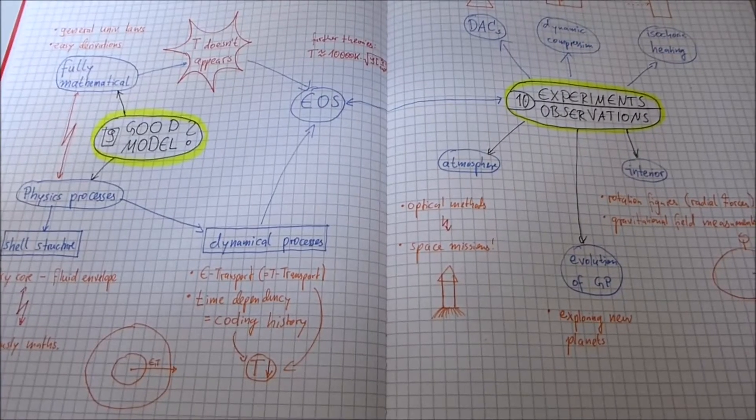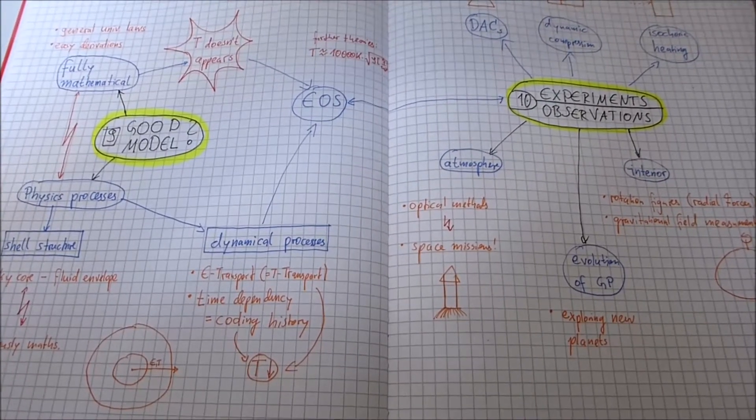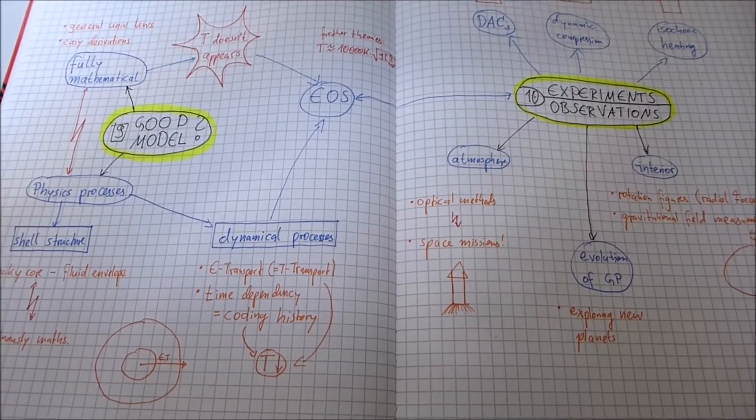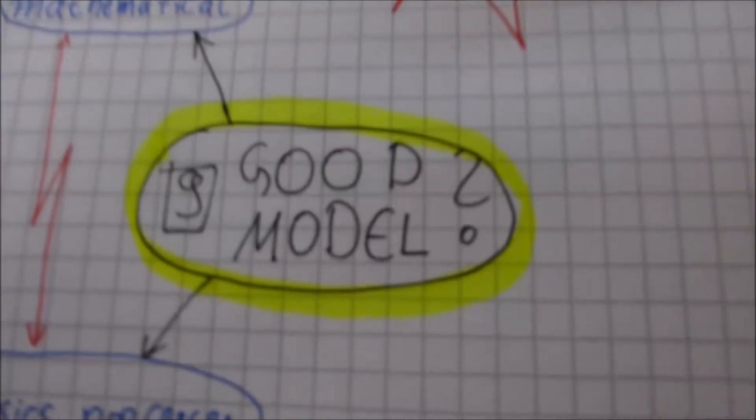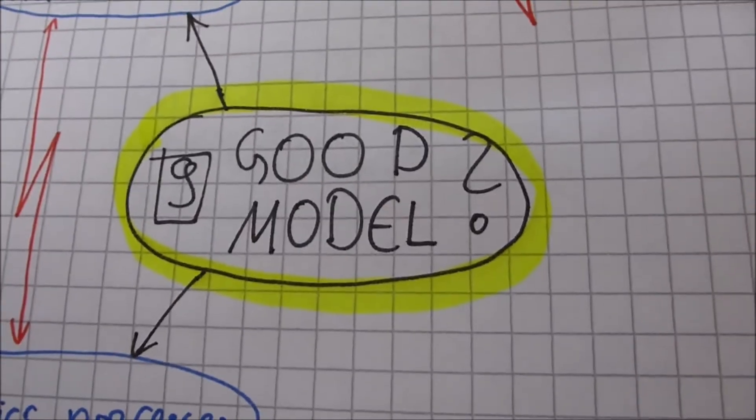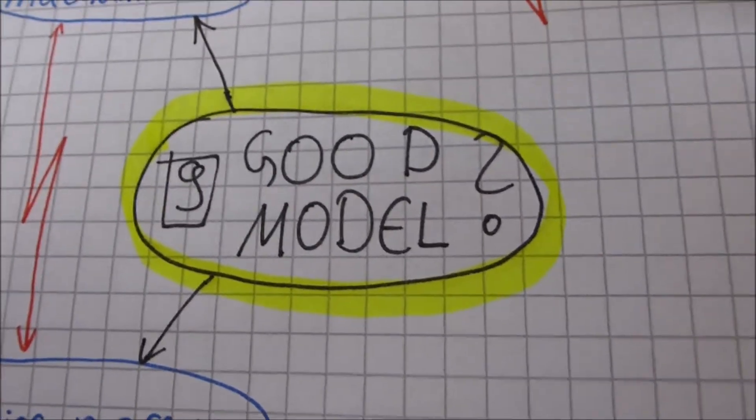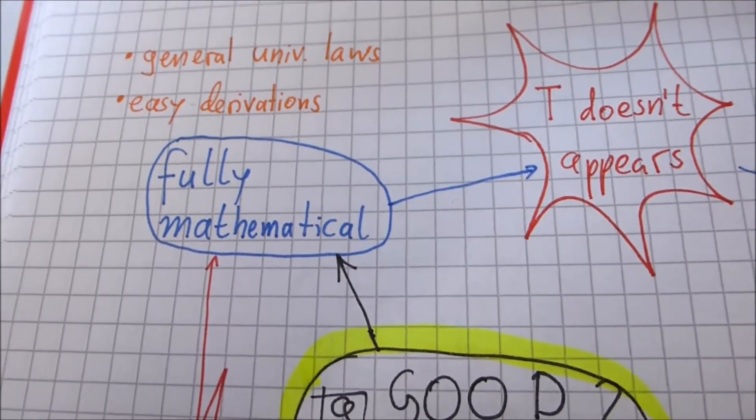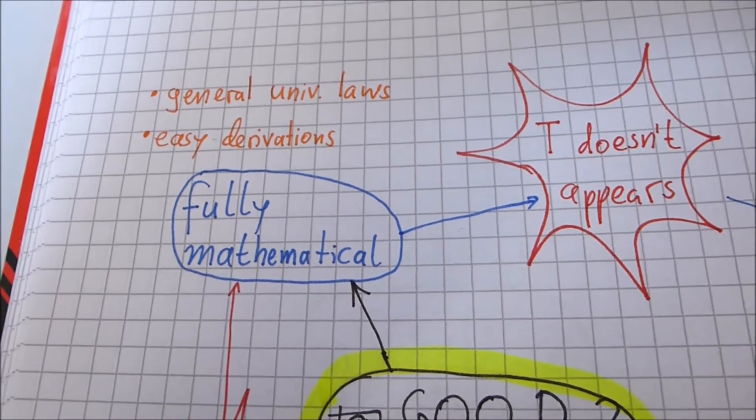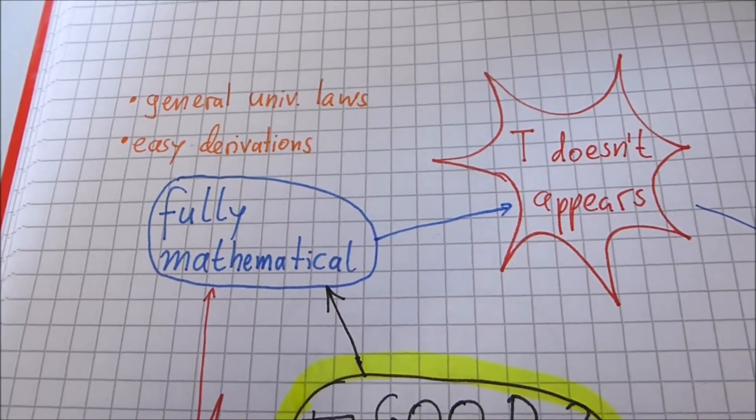In the last two exercises, I wrote a big text. So I did a mind map to explain what I said in the text. So first, task 9, is the Lane-Emden equation a good model for these things. And first I have to say, it's a fully mathematical model that have advantages and disadvantages.